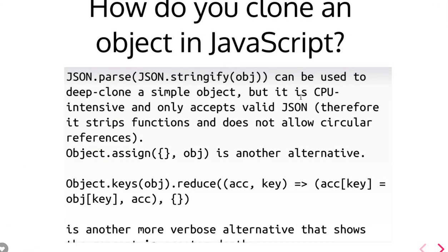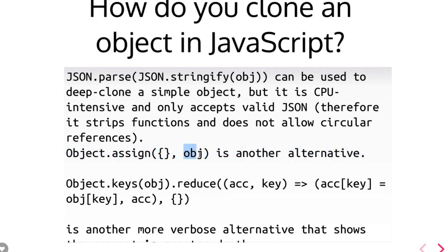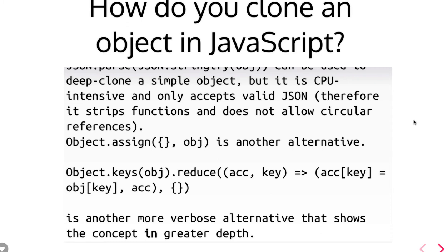Now let's talk about objects. You will face a lot of questions on object cloning — how you compare two objects, how you can clone one object into another object, the shallow copy of an object, deep copy of an object. How can you do a deep copy where you change the object but it doesn't impact the original? Deep copy can be done using JSON.parse — first stringify the first object and JSON.parse it again, so it will be a deep clone. Then we have Object.assign, introduced in ES6 — create an empty object and pass the source object.